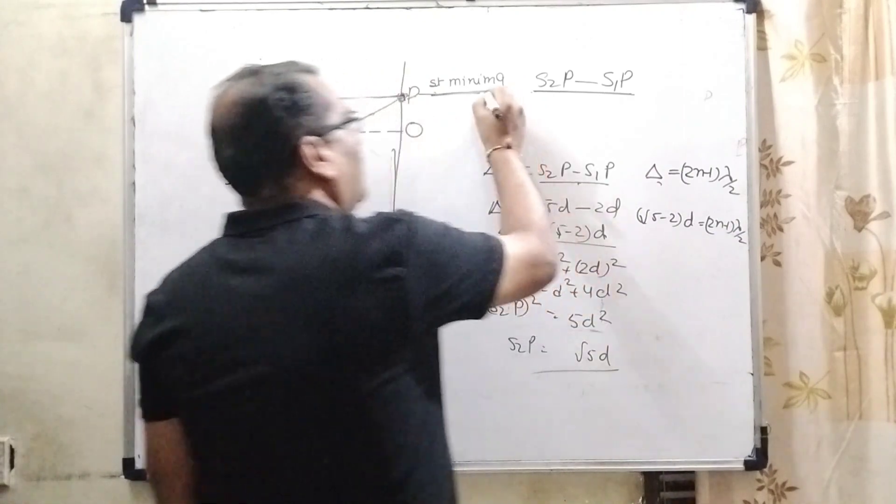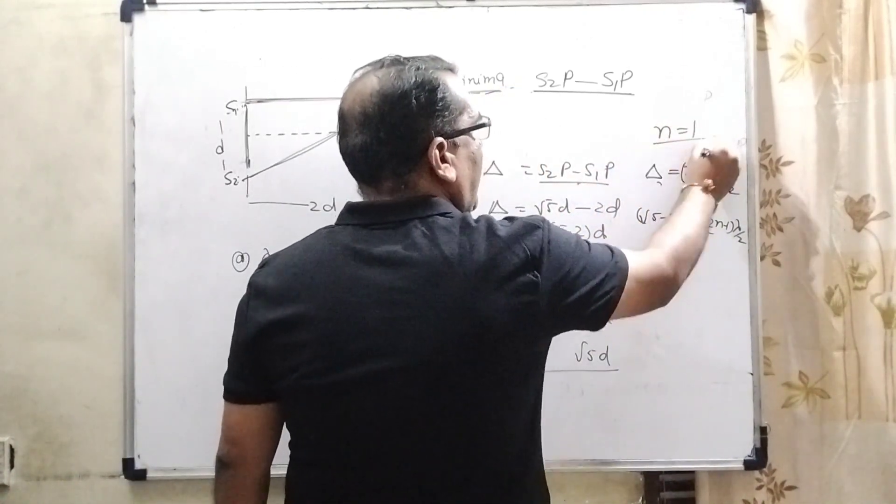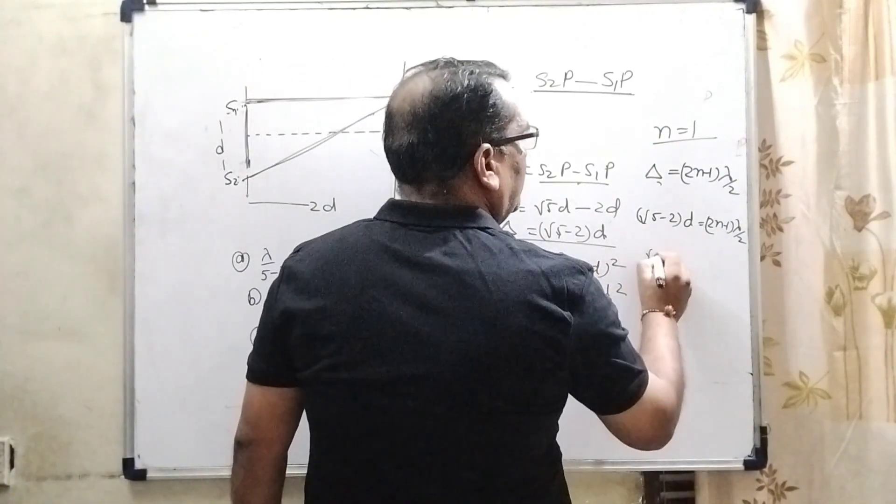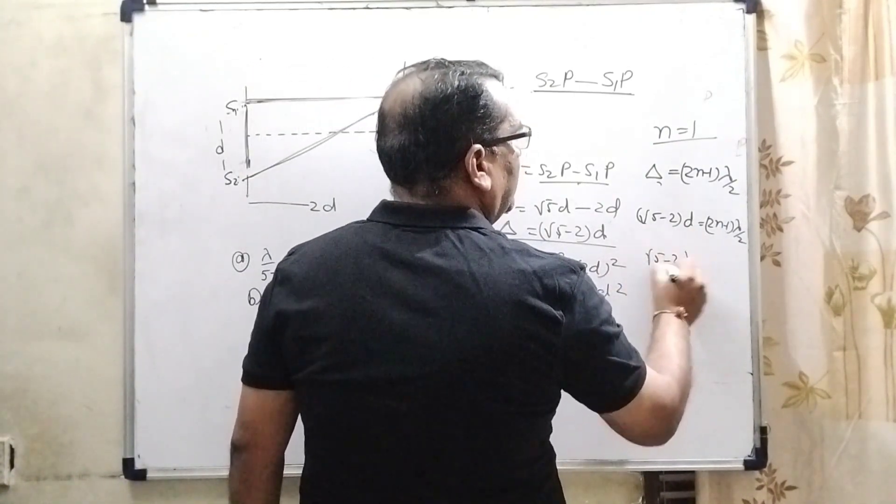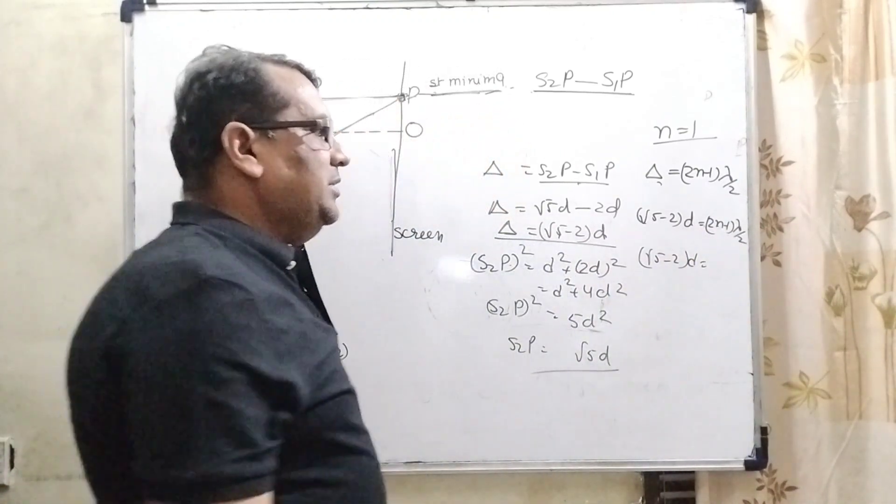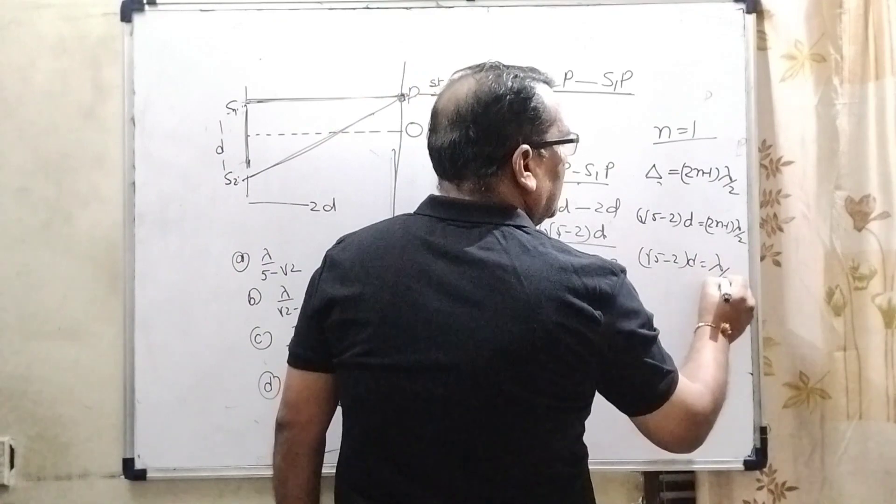For the first minima, n equals 1. Now substitute the value root 5 minus 2 times d. So, here for the first minima it equals lambda by 2.